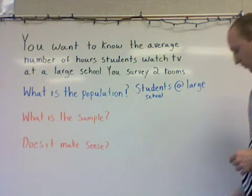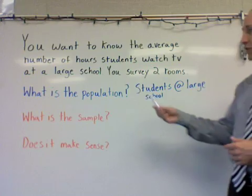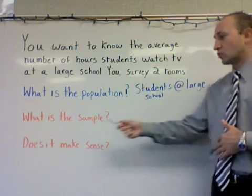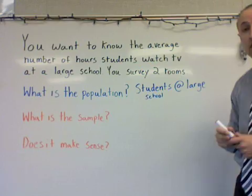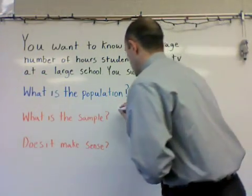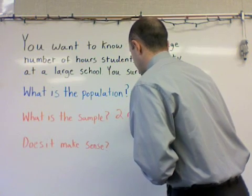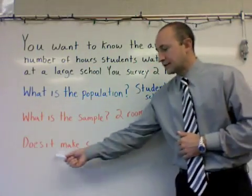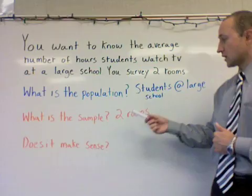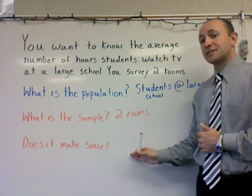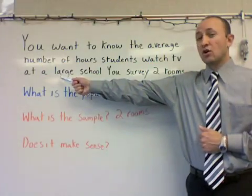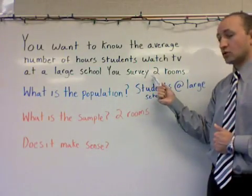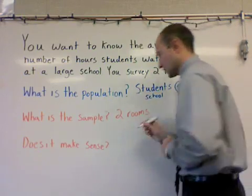I've identified the population. Now, is there a sample? Yes, there is. Since the school is so large, we've decided to only survey two rooms. So the sample is the two rooms we're surveying — I'll put in two rooms. Does it make sense to use a sample? In this case it does, because this is a large school. So instead of surveying everyone, we just survey students in two classrooms. Yes, it does make sense.